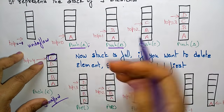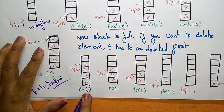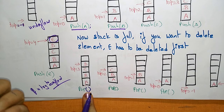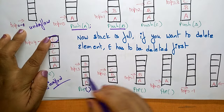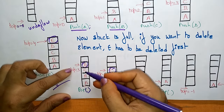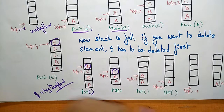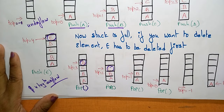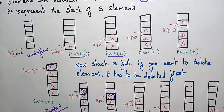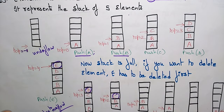To delete elements, we use the pop operation. Pop doesn't take arguments — it always deletes the topmost element. So first E is deleted, then D, then C, and so on. As elements are popped, the top decrements: 3, 2, 1, 0, and finally minus one, which again indicates underflow. This is how elements are inserted and deleted in a stack using push and pop operations.